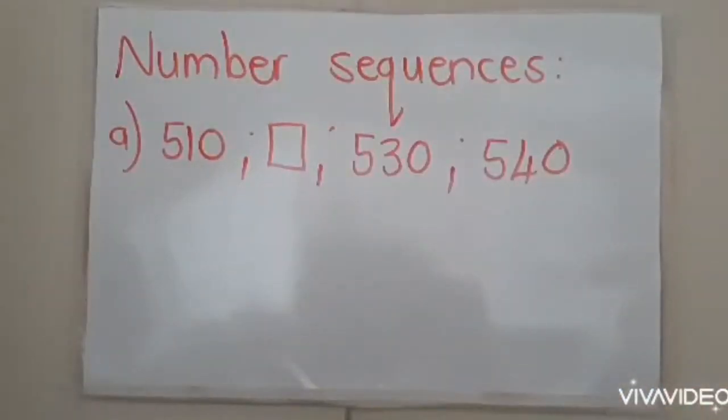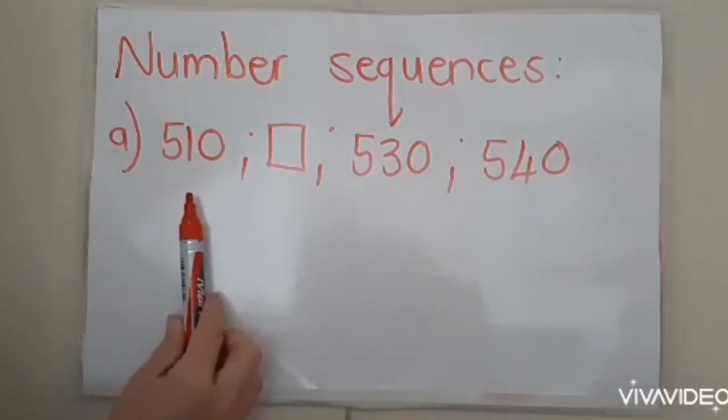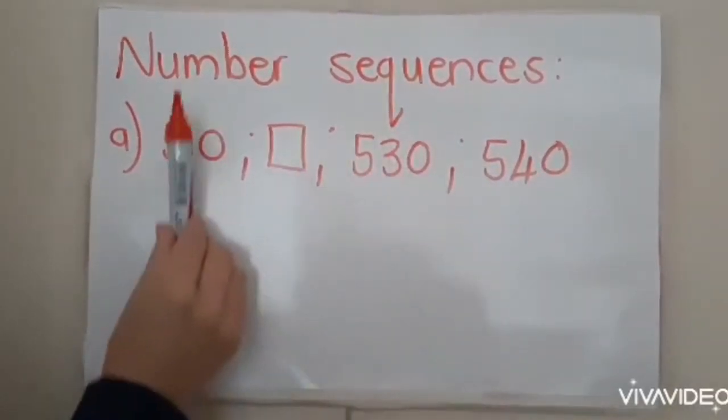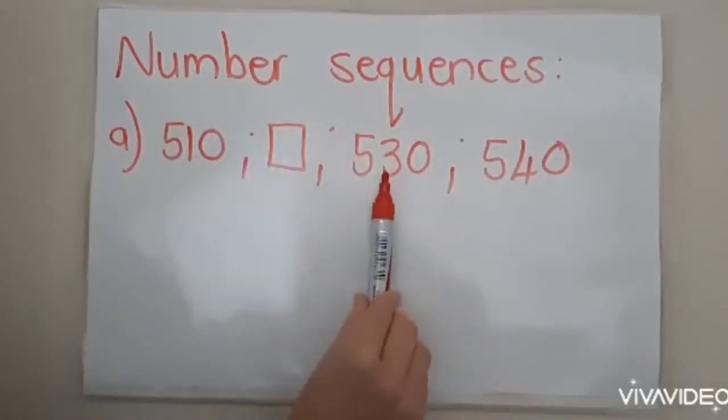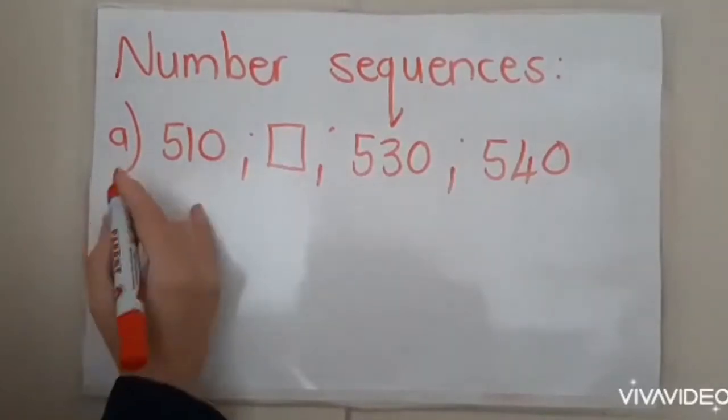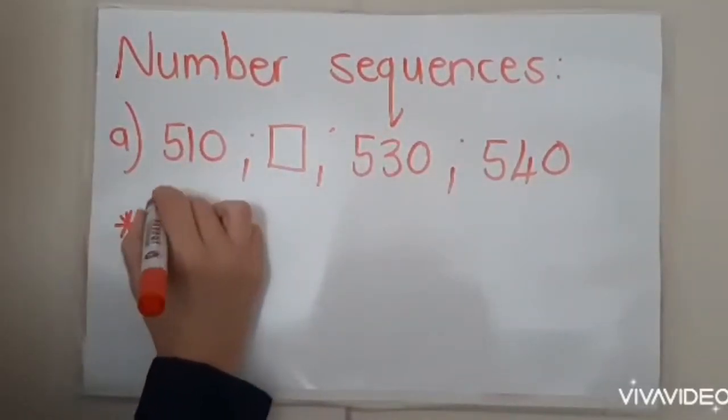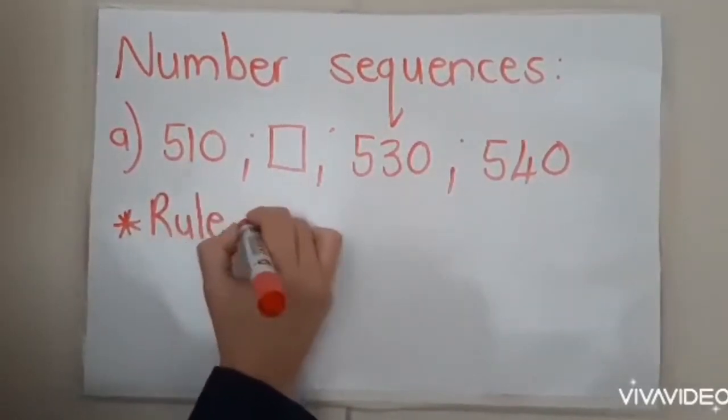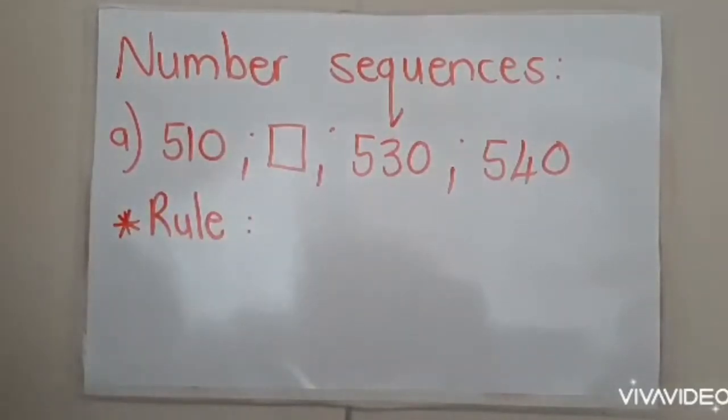Now we look at number sequences. So this is actually a pattern that we need to follow. What happens here? First, we need to find the rule. So what is happening from this number to that number, to that number, to that number. So let's write here our rule. So what do you think will our rule be?